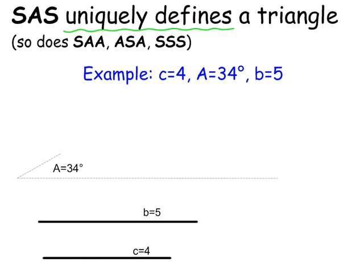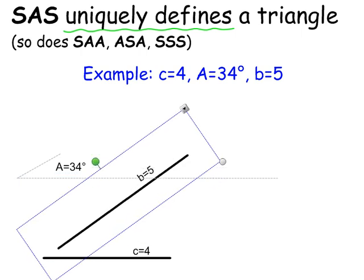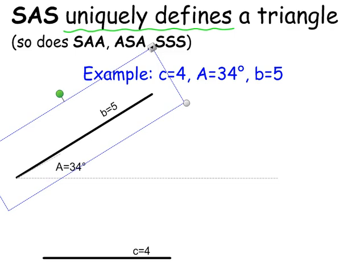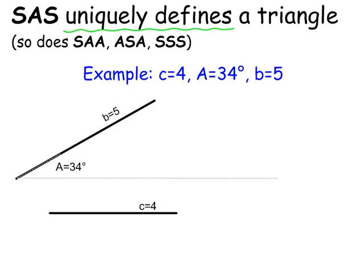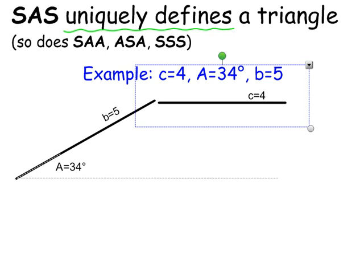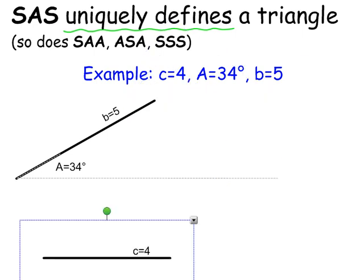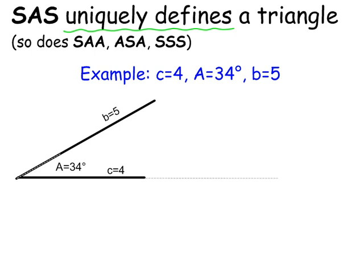Here's a quick example of the SAS case. We see that angle A is 34 degrees and side b is 5 units long. It doesn't really matter whether I consider b to be down here or over here, as long as it's not across from angle A — because little a has to be across from big A, little b across from big B, and so on.